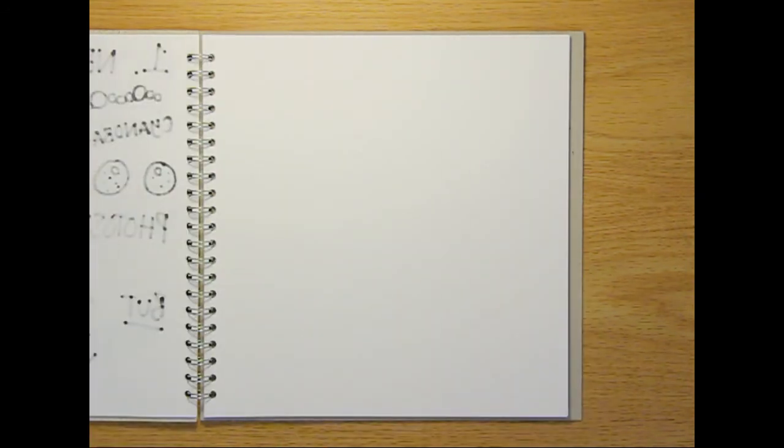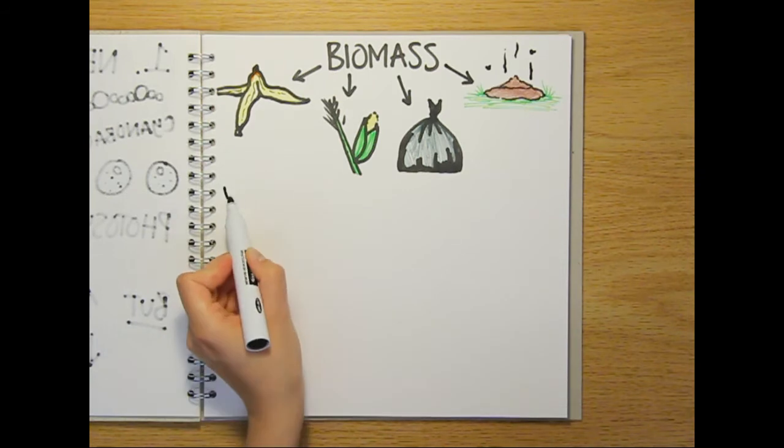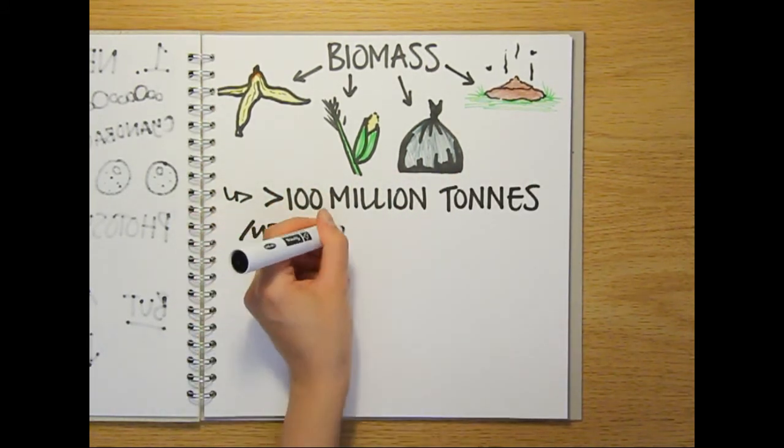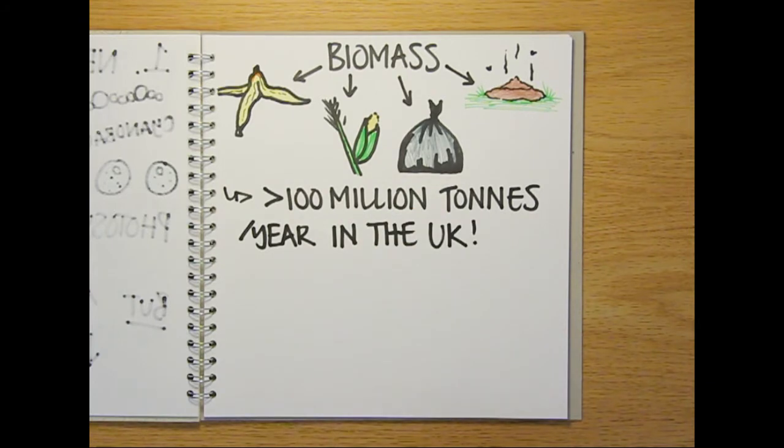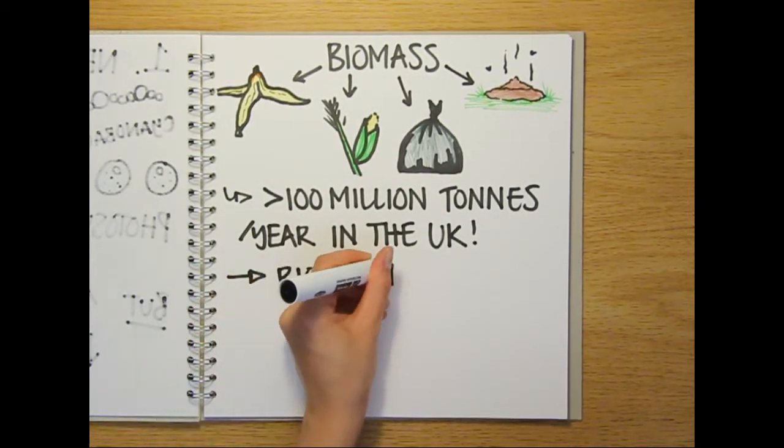The next two methods both begin with biomass. This can be any type of biological matter from waste food or wood, corn stalks, domestic rubbish and even sewage. In the UK alone, we accumulate over 100 million tonnes of these biodegradable wastes every year. This biomass can be collected and sent to a production plant called a biorefinery.